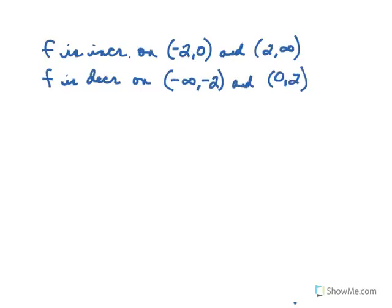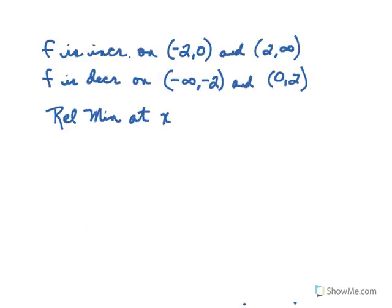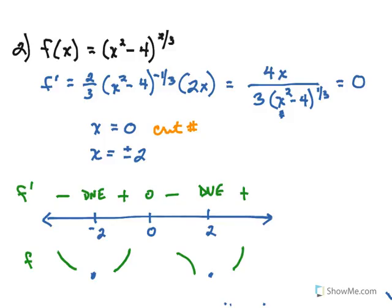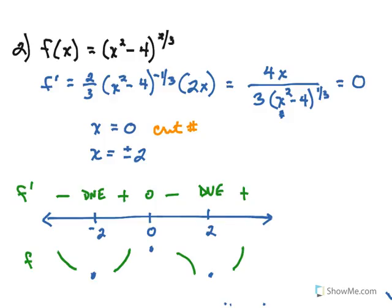In terms of our relative maximum and minimum points, going back to our number line analysis, it looks like we have two different minimums at x equals negative 2 and x equals positive 2. And the maximum is occurring at x equals 0. Now if by chance you had to provide the ordered pairs for these relative extrema points, remember that we have our x values. For the y values, you would have to substitute into the original function to obtain them.